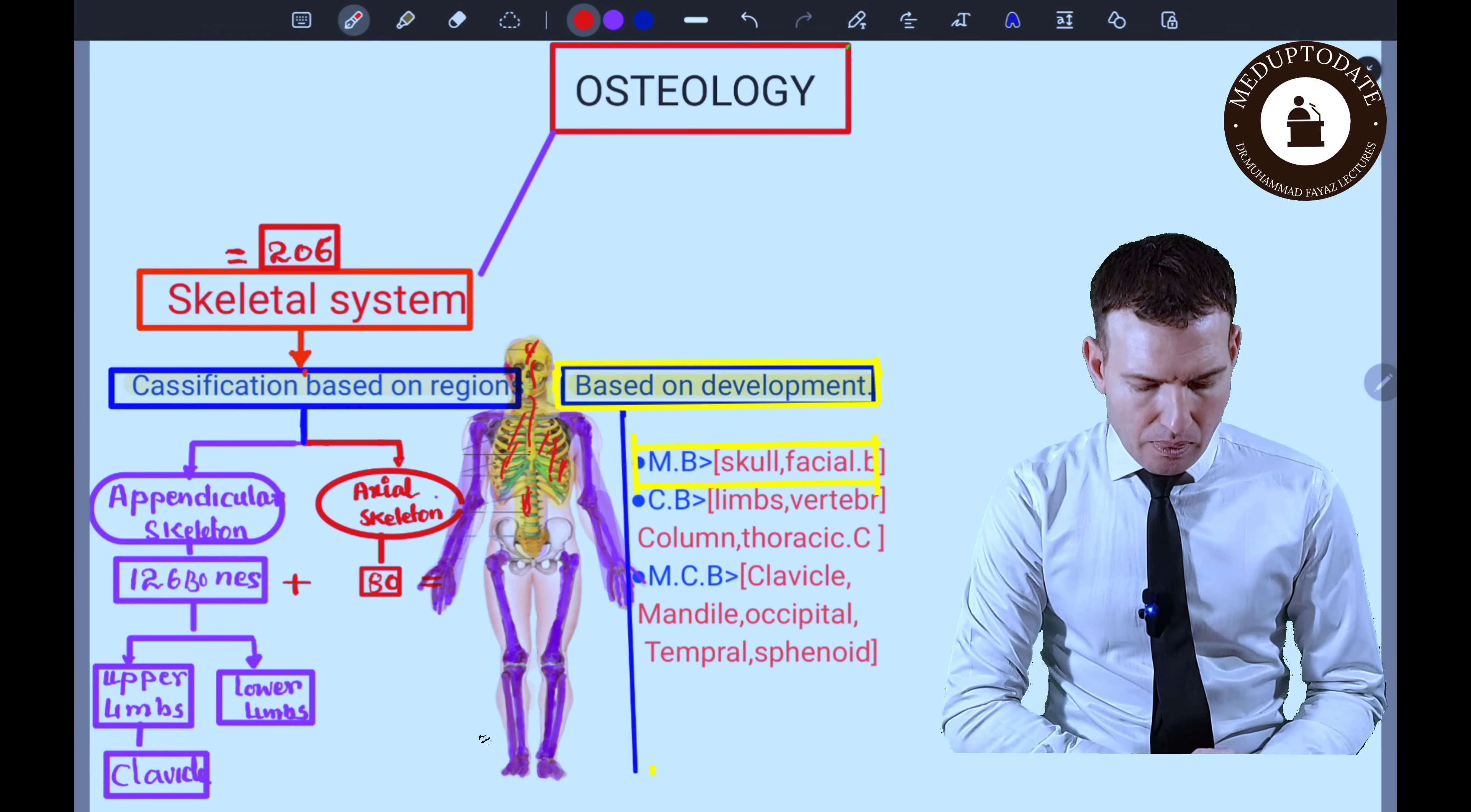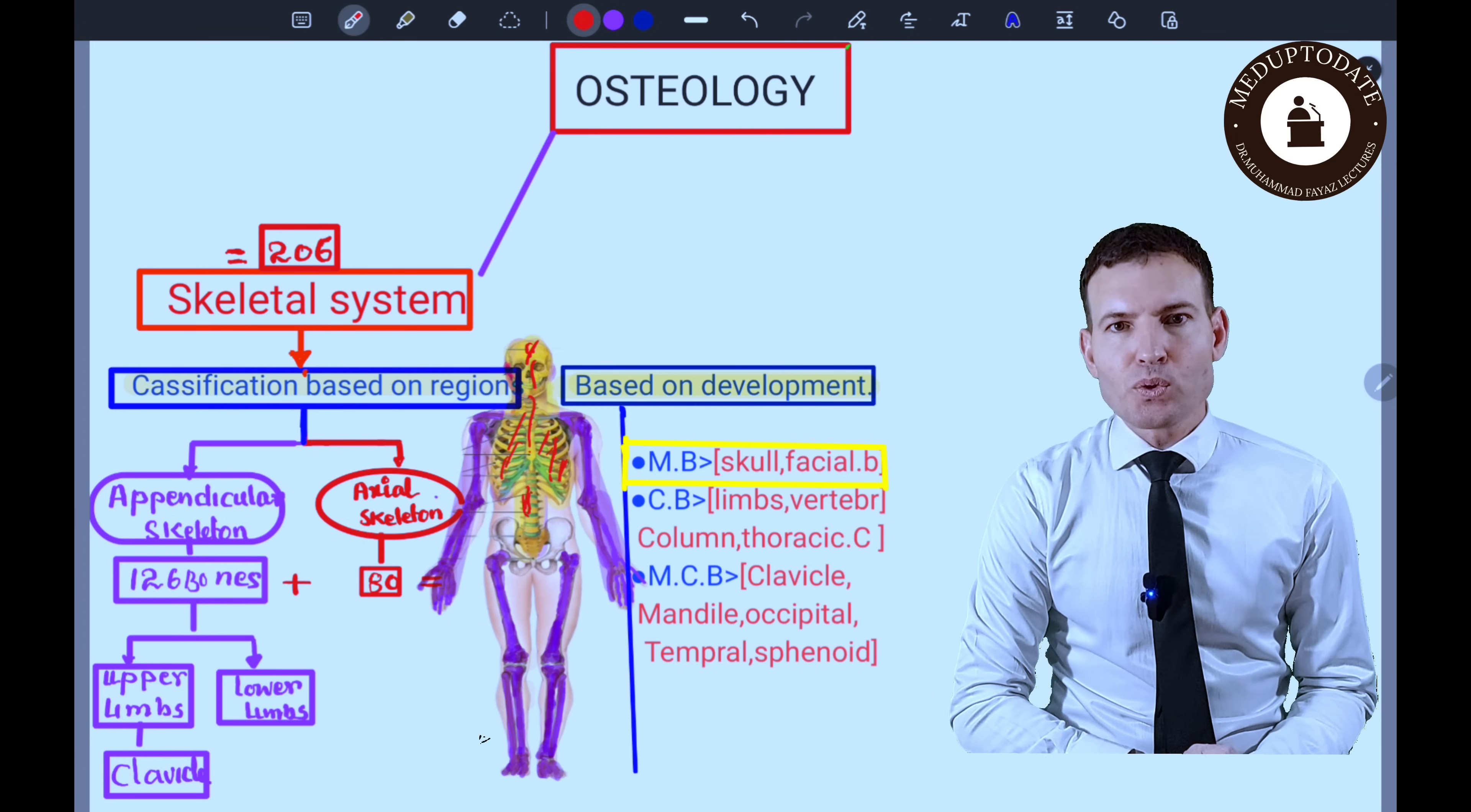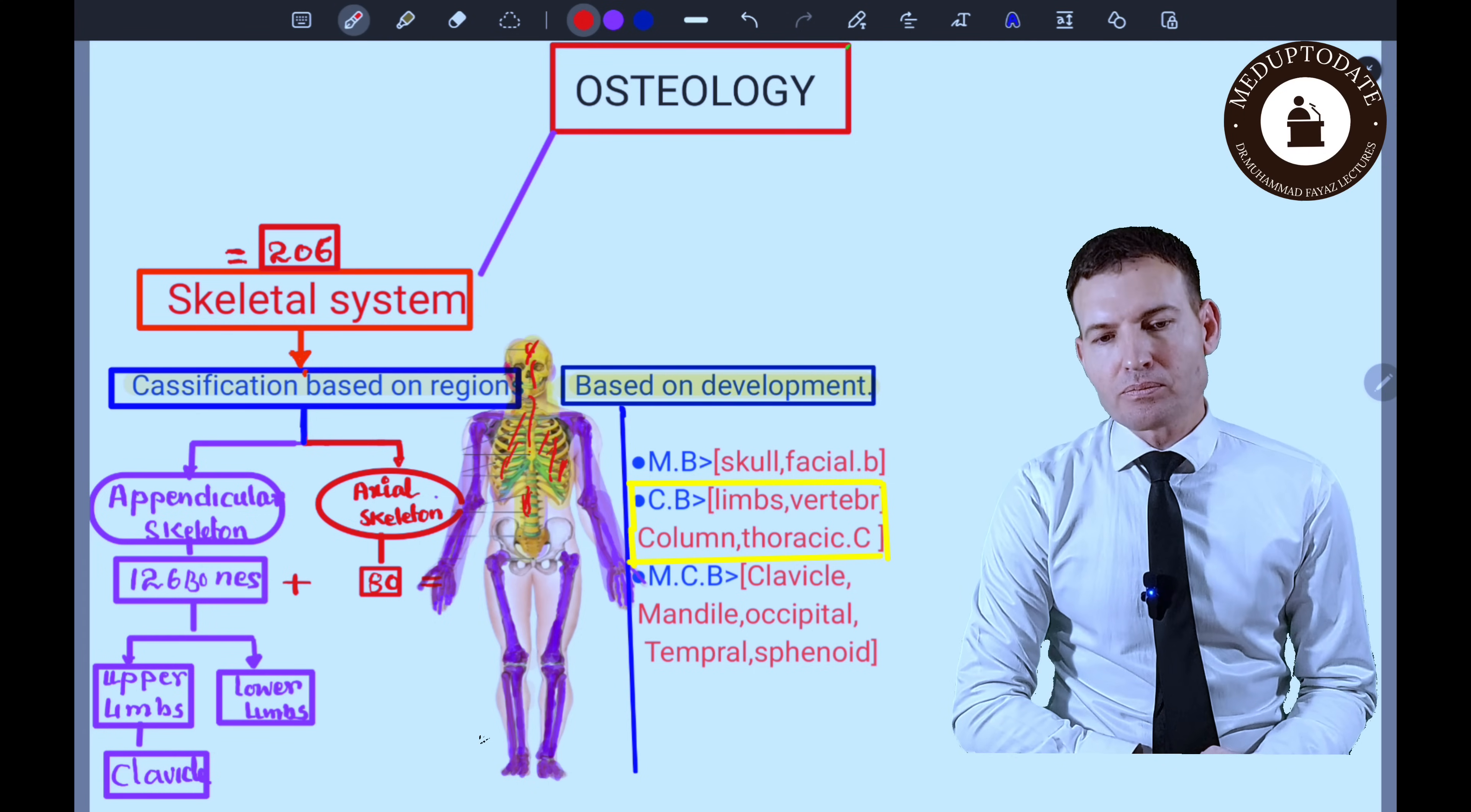The next classification of skeleton or bone is based on the development or its origin. Some of the bones ossify in membrane and they are called membranous bones. And some of the bones ossify in cartilage—mostly they ossify in cartilage.